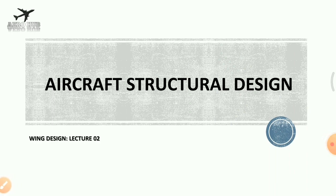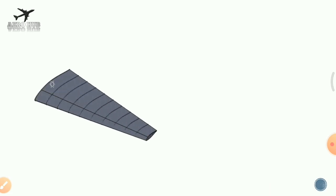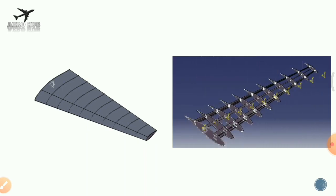Welcome back to AeroHub. We are discussing Aircraft Structural Design, and this is the second lecture on wing design. In the previous lecture, we discussed the types of loading acting on the wing, the different elements of a wing section, and the functions of structural members such as ribs, skin, spar, and stiffeners, as well as the types of stresses acting on these members.